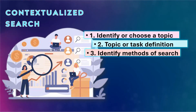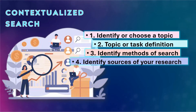Number three, identify methods of search. Here you can either perform experiments, explore, get a survey of the subject matter, and look at the textual content of the search. Number four, identify sources of your research. Reliable sources are very important to obtain rich and accurate information for your research.